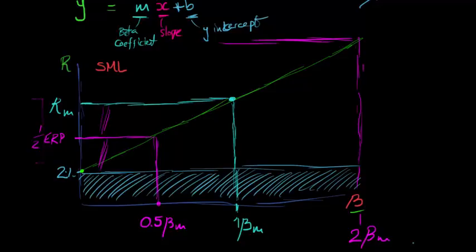Twice as risky as the market, and we need twice the equity risk premium. It's 2 times the equity risk premium plus the risk free rate. That's the return here.